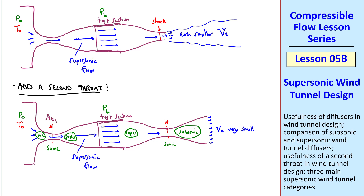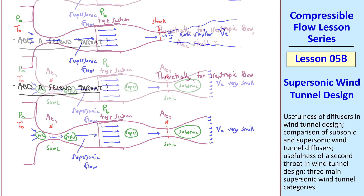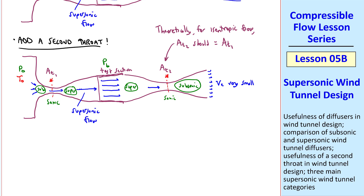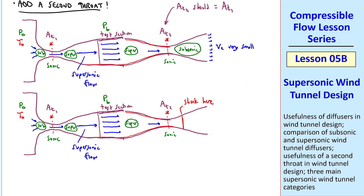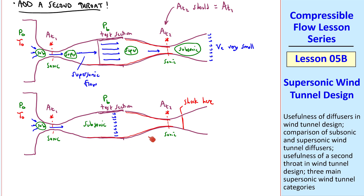Let's call the first throat area A_T1 and the second one A_T2. Theoretically, for isentropic flow everywhere, A_T2 should equal A_T1. But real life isn't isentropic — there will be friction along the walls, and a displacement effect due to boundary layers that effectively makes the area smaller. So if A_T2 equals A_T1, in real life you would get a shock forming and this throat would be choked, with everything upstream becoming subsonic. You no longer have a supersonic wind tunnel — the speed through the test section would be extremely low.